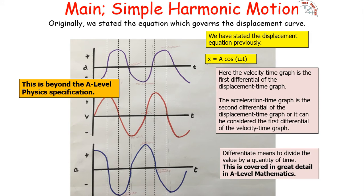We can go a little beyond the specification to understand where this comes from. The displacement equation is x equals A cos(ωt). The velocity-time graph is the first differential of the displacement-time graph, while the acceleration-time graph is the second differential of the displacement-time graph, or the first differential of the velocity-time graph.